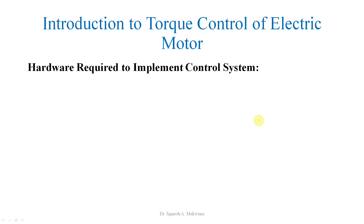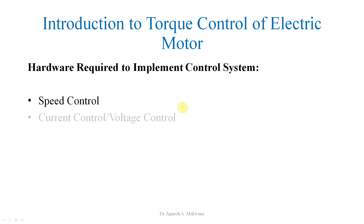We also need to understand the hardware requirements for implementing a control system. When you study direct torque control, you will see that in hardware, different sensors and extensive calculations are required, which demands more sophisticated electronic processors. For speed control, we require speed measurement, and we have mechanical speed sensors that can be used. For current and voltage control, we require current sensors and voltage sensors.